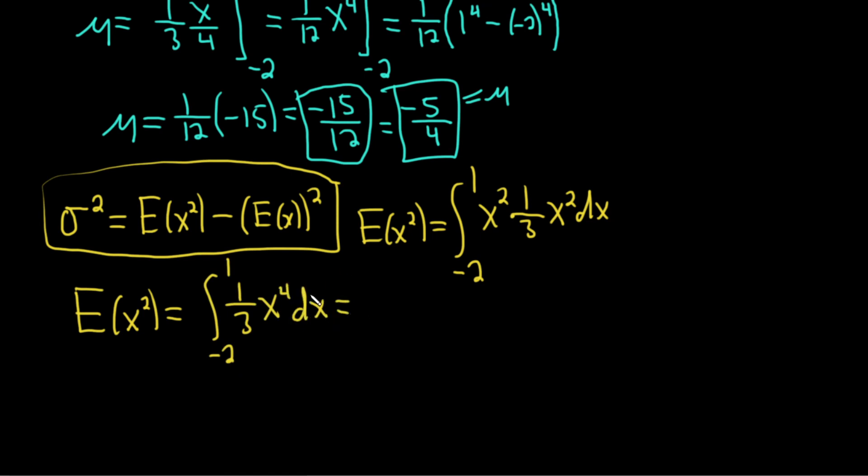Now we integrate. It'll be x to the 5 over 5, so we have one-third x to the 5 over 5, which is one-fifteenth x to the 5, going from negative 2 to 1.